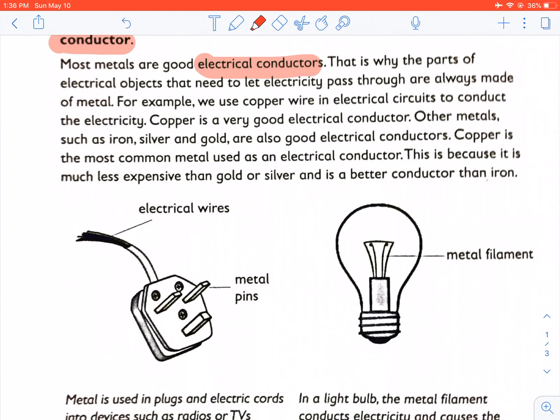That is why parts of electrical objects that need to let electricity pass through are always made of metal. For example, we use copper wire in electrical circuits to conduct the electricity. Copper is a very good electrical conductor.